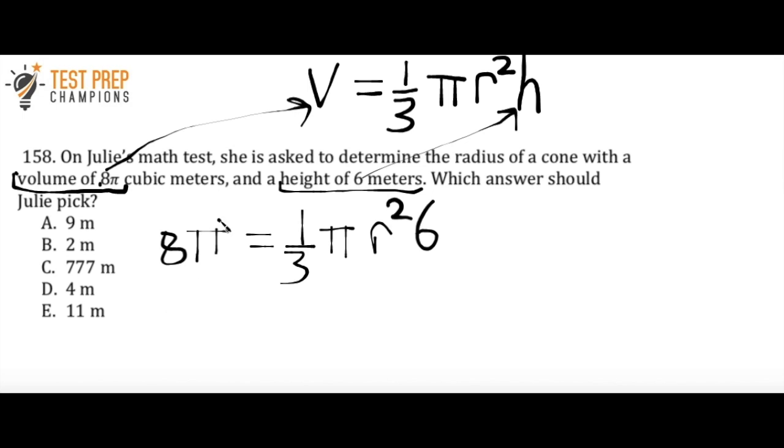And basically what we can do now is we can cancel out pi from both sides of the equation because we've got a pi on both sides of our equal sign. And we can also do 6 divided by 3. And I realize that there are other ways to look at this. This isn't the only way to proceed. But I think that this is a pretty simple way to do it because that's going to leave us with 8 equals 2 times r squared. And so basically now what we want to do is divide by 2 on both sides.